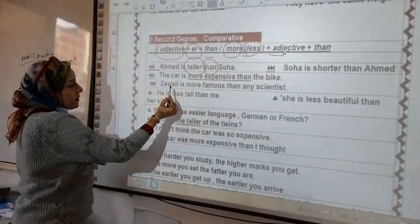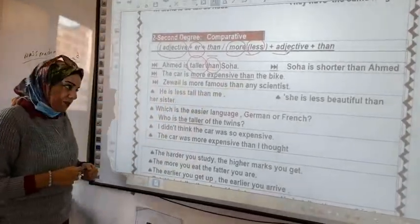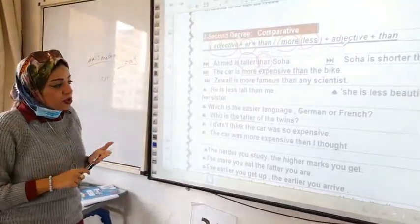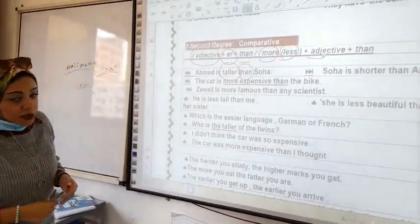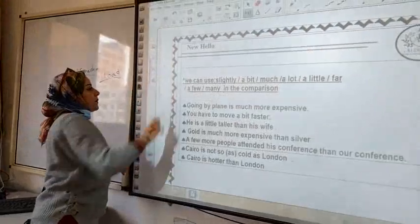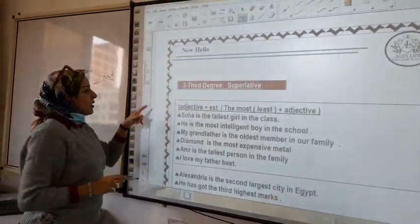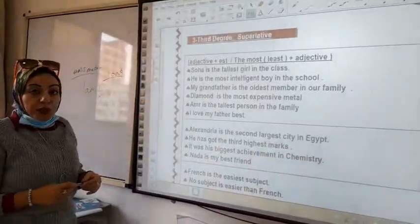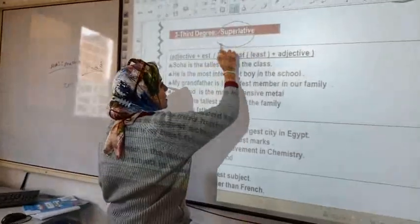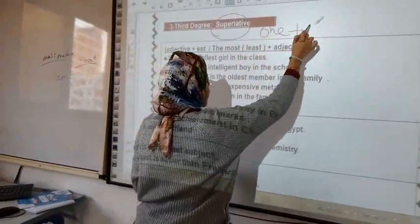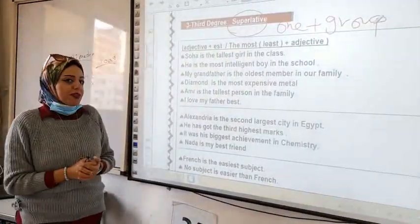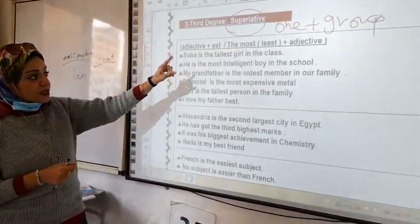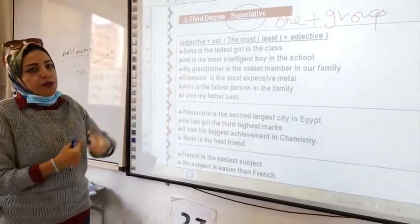But here, the color is more expensive than the one. But again, note senior two, because we have exceptions for the comparative. But I'm going to move after we finish the superlative. Number three, if I want to make superlative, look at here. What's superlative? You are comparing one person and a group. Comparison means only two things or two persons. But superlative means one and a group.